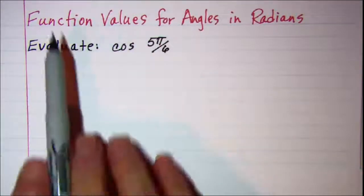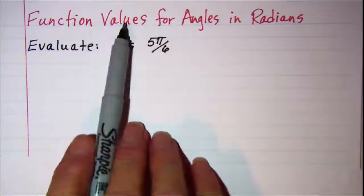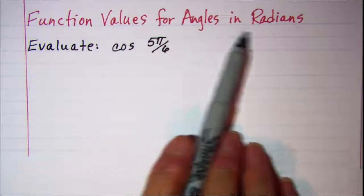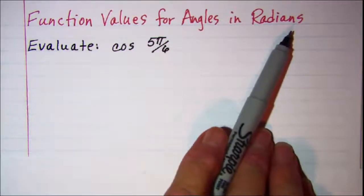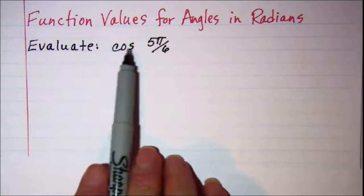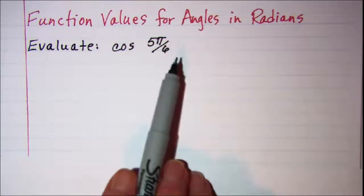In this video we'll be looking at trig function values for angles given in radian measure. Our first problem is to evaluate the cosine of 5 pi over 6.